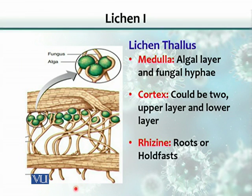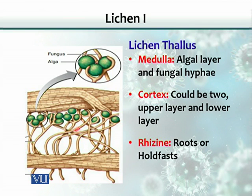Looking at the structure of these lichens, they are made up of various parts. The middle part is called the medulla, where both the alga or cyanobacterium and the fungus are located. The two outer layers are called the cortex, and from the cortex, root-like structures called rhizines project out — these are responsible for holding the thallus or body to the surface.